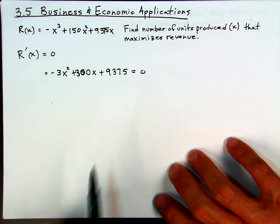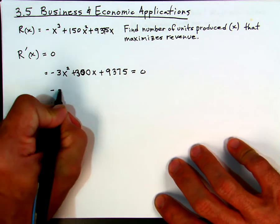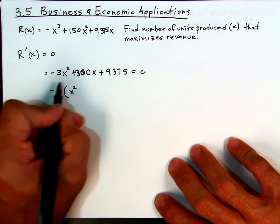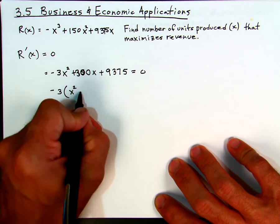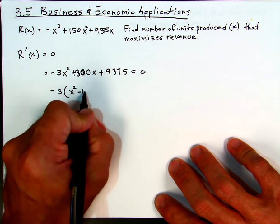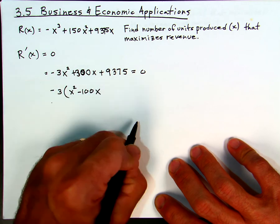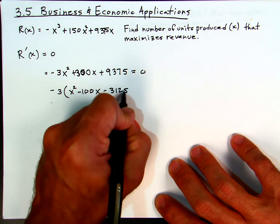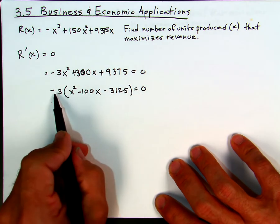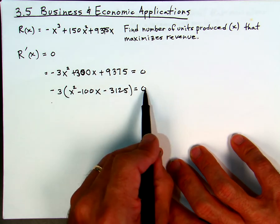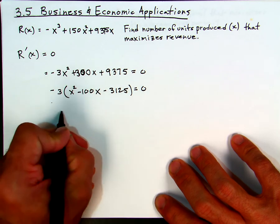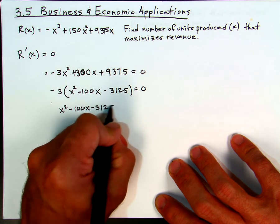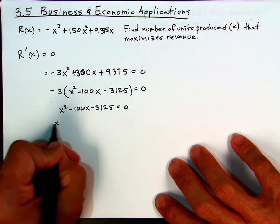We set this equal to zero. We start off with the cubic and end up with the quadratic, and we want to find x that would make this equal to zero. The first thing I'm going to do is factor out negative 3. That gives x squared here, and this is going to be negative 100 — since negative 3 times negative 100 gives me positive 300. Factoring out here, I'll end up with negative 3,125.